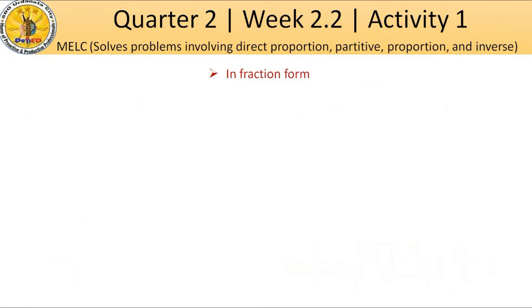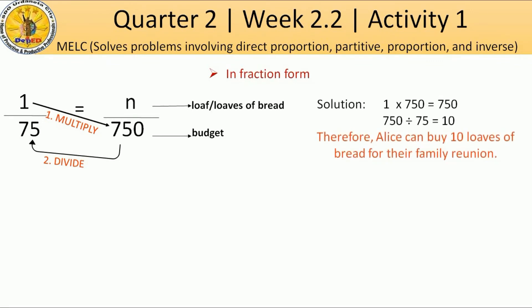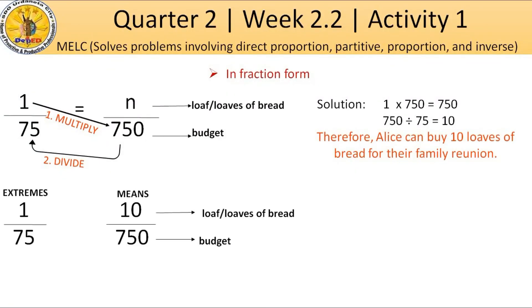I have here also another representation in terms of fraction: simply multiply 1 to 750, then the product will be divided by 75 and the answer is 10. Therefore, Alice can buy 10 loaves of bread for their family reunion. In terms of checking the answer, let's do the cross multiplication: 1 times 750 is equal to 750, and 75 times 10 is equal to 750.